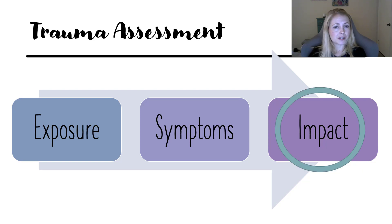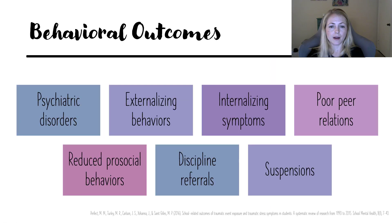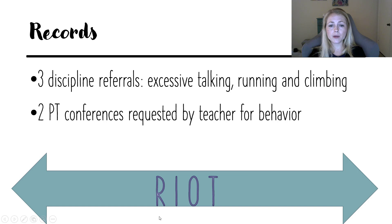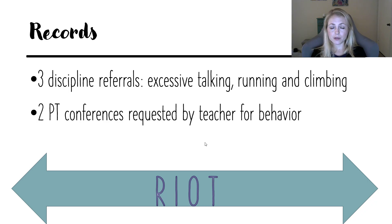When we look at this child's impact data, we're looking for red flags in these categories: psychiatric disorders, lower adaptive skills, externalizing and internalizing behaviors, discipline referrals, suspensions, and all those behavioral outcomes. For the R in RIOT, records: he did have at school in kindergarten three discipline referrals already for excessive talking and running and climbing when he was expected to be seated. There were already two parent-teacher conferences requested by the teacher for his behavior.